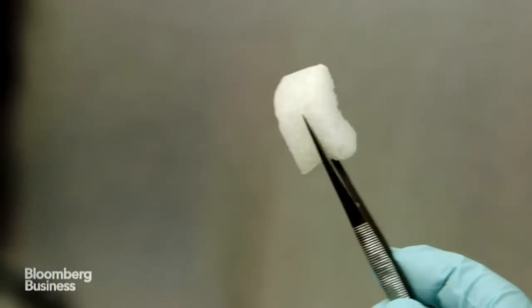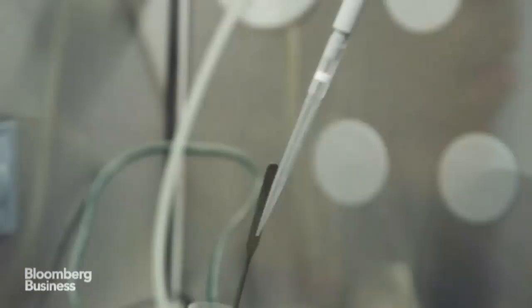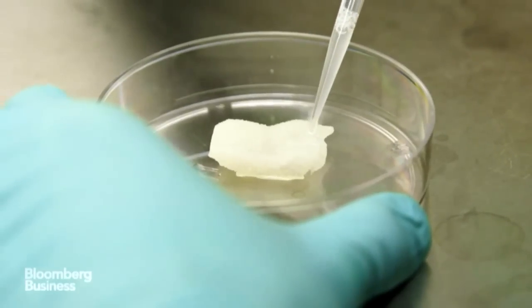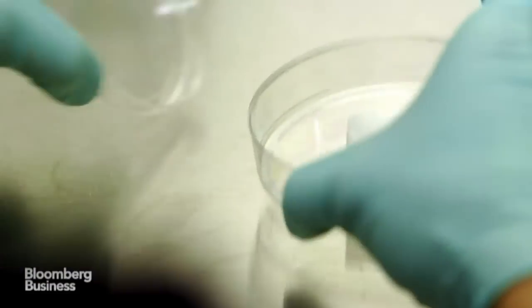In our case, we're using a bone tissue from a cow that's stripped of all of its cellular material. But the microstructure contains information that speaks to those stem cells and encourages them to move down the bone differentiation pathway.